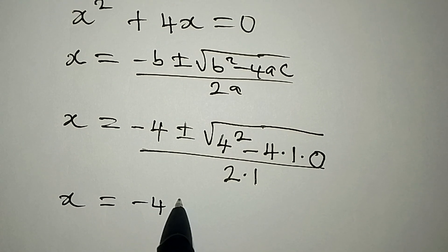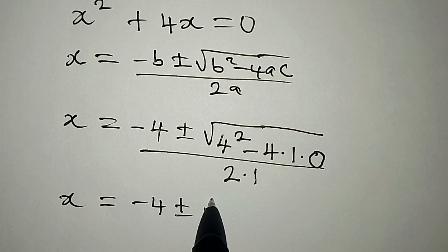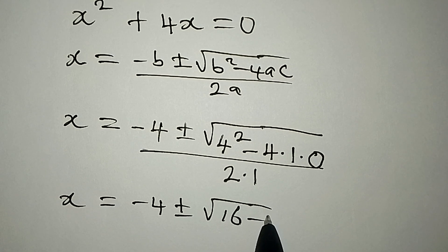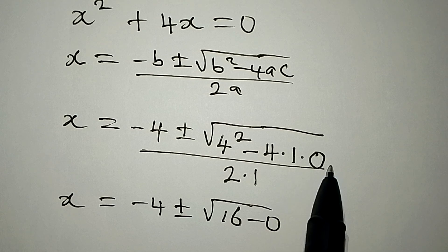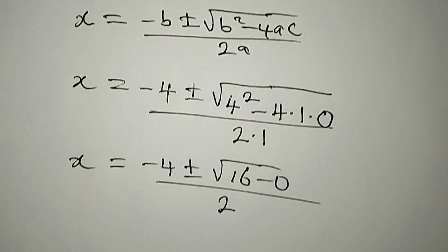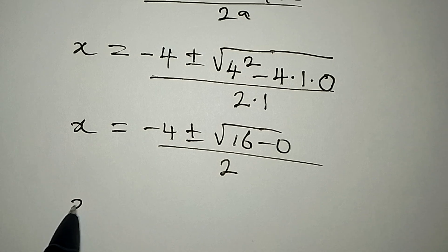To continue with this, x is equal to minus 4 plus or minus we have square root of 4² is 16, then we have 16 minus 0, because 4 times 1 times 0 is 0. This is all over 2.